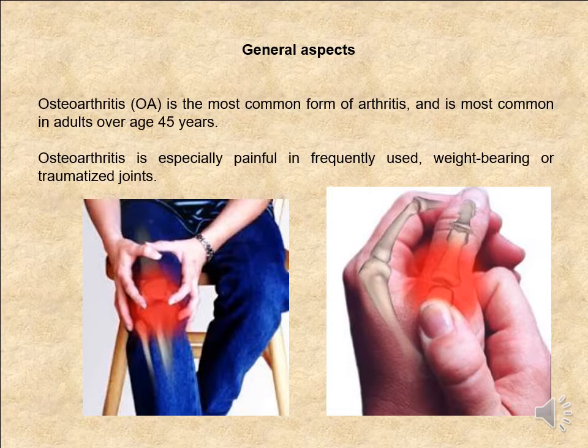In general, osteoarthritis, or OA, is the most common form of arthritis and is most common in adults over the age of 45 years. Osteoarthritis is especially painful and frequently affects weight-bearing or frequently-used joints. Severe osteoarthritis especially involves the lower limb, and the condition worsens when there is more trauma to the joint.